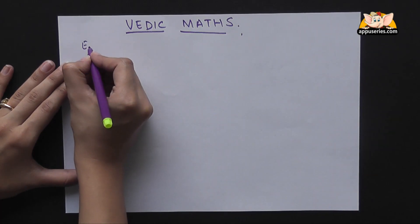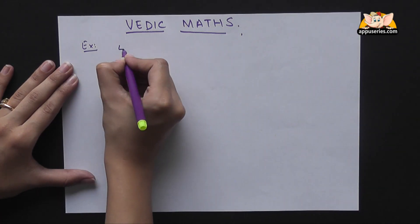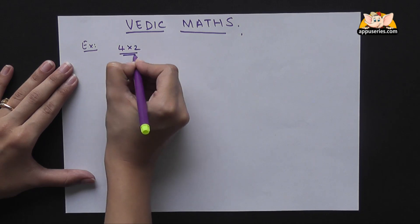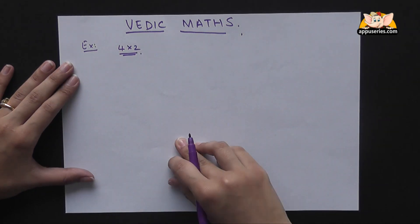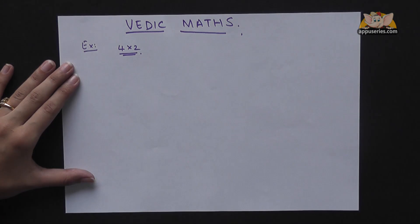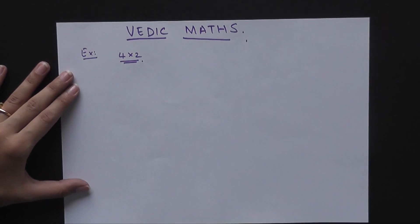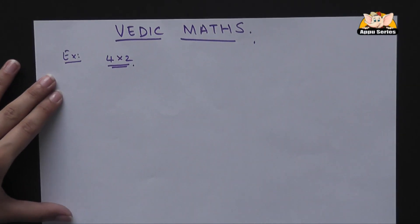First I will show you an easy example, say 4 x 2. Now in Vedic Maths, the way to depict the problem is very different. So watch this carefully.